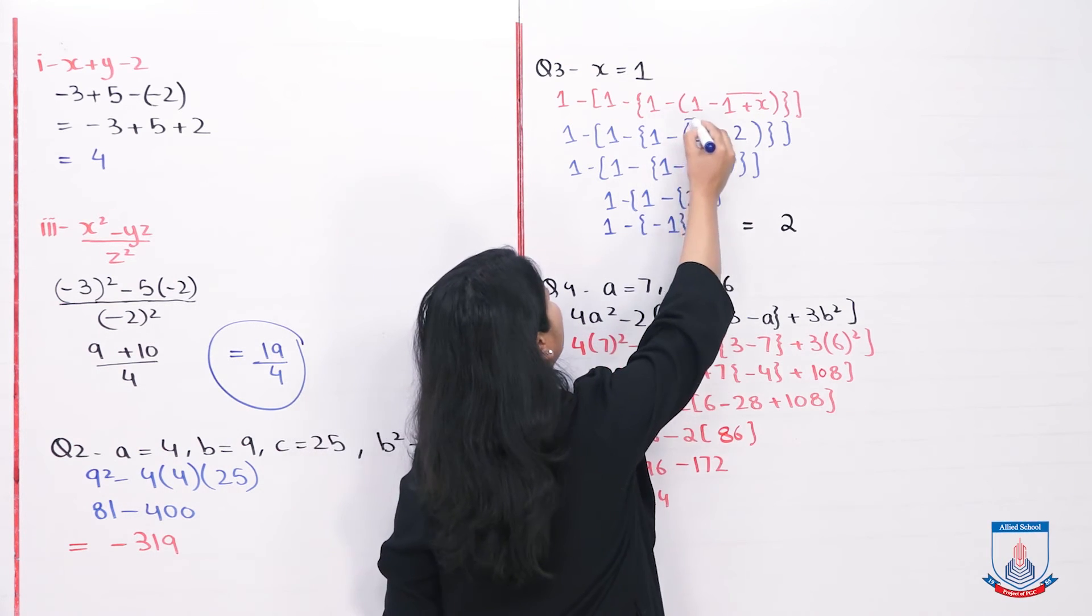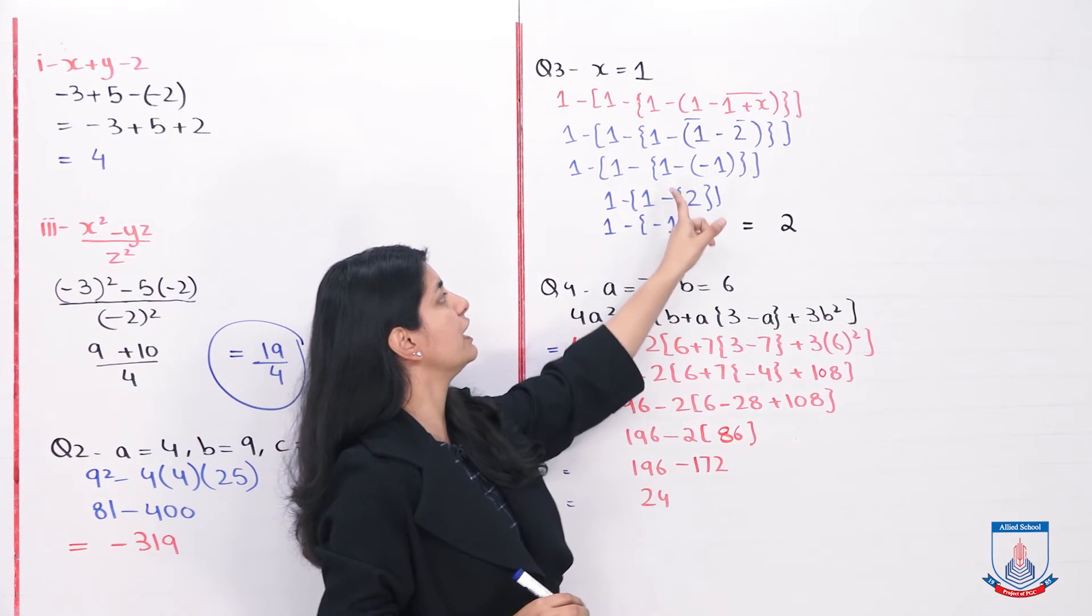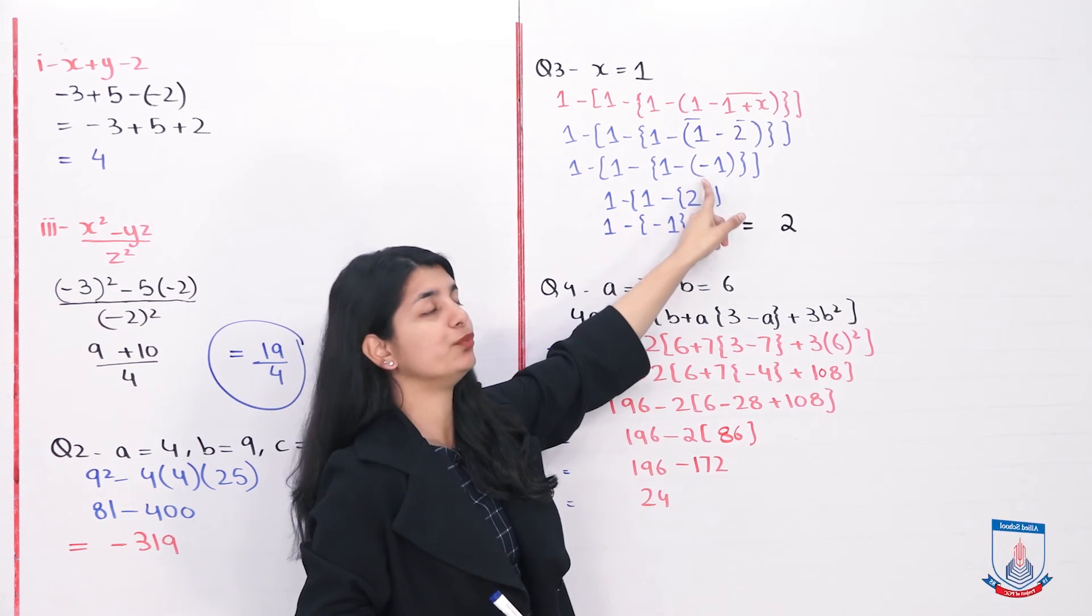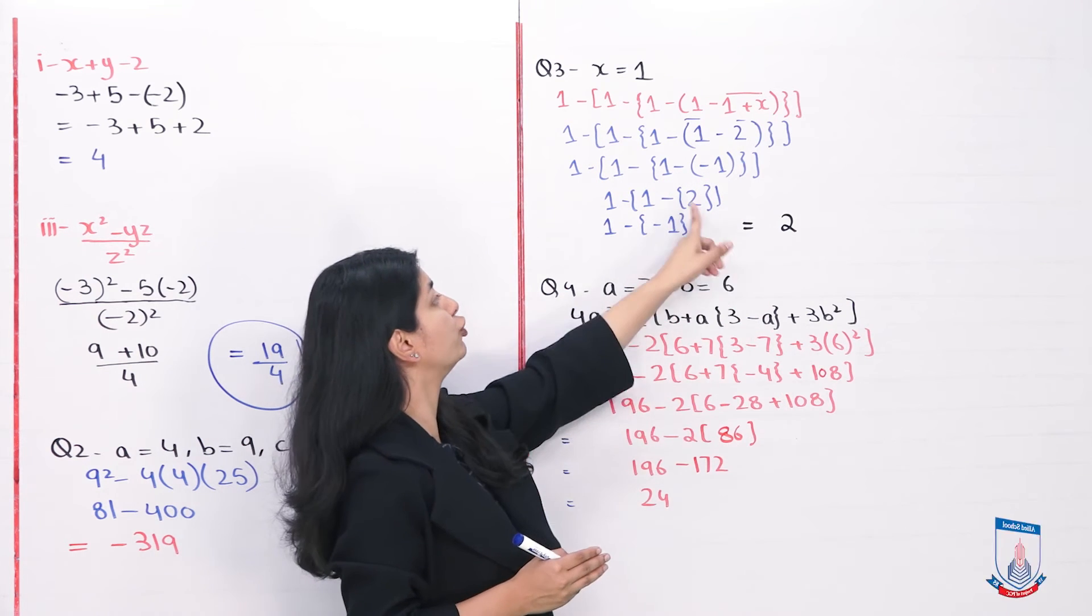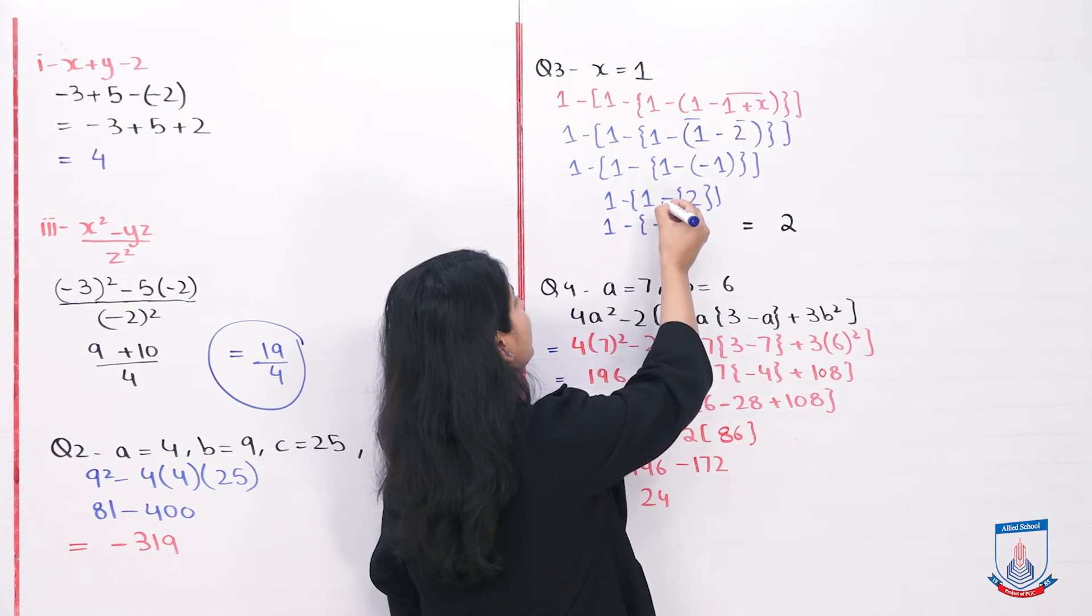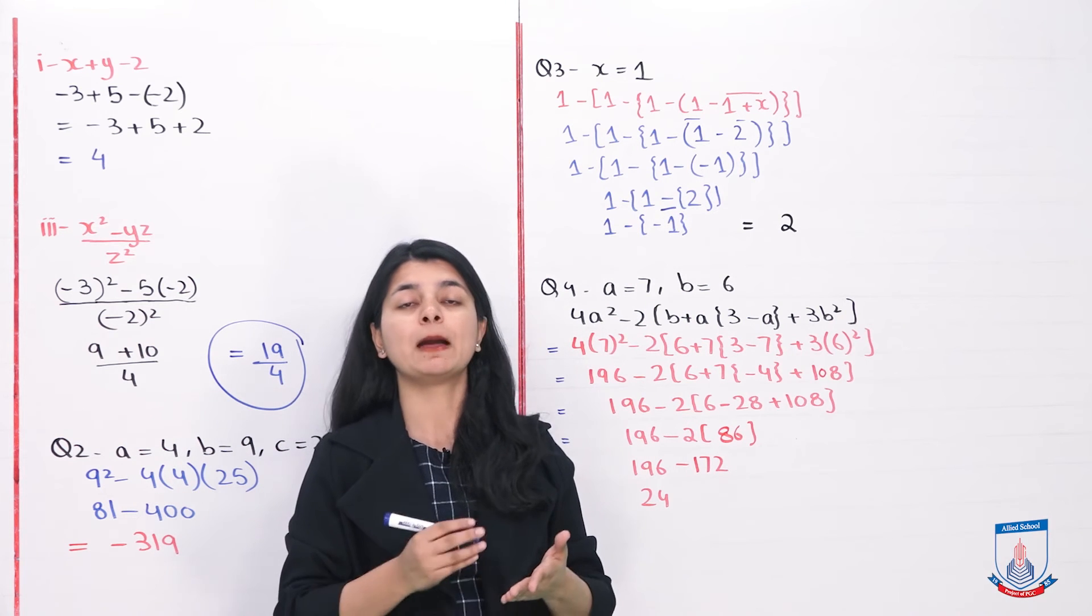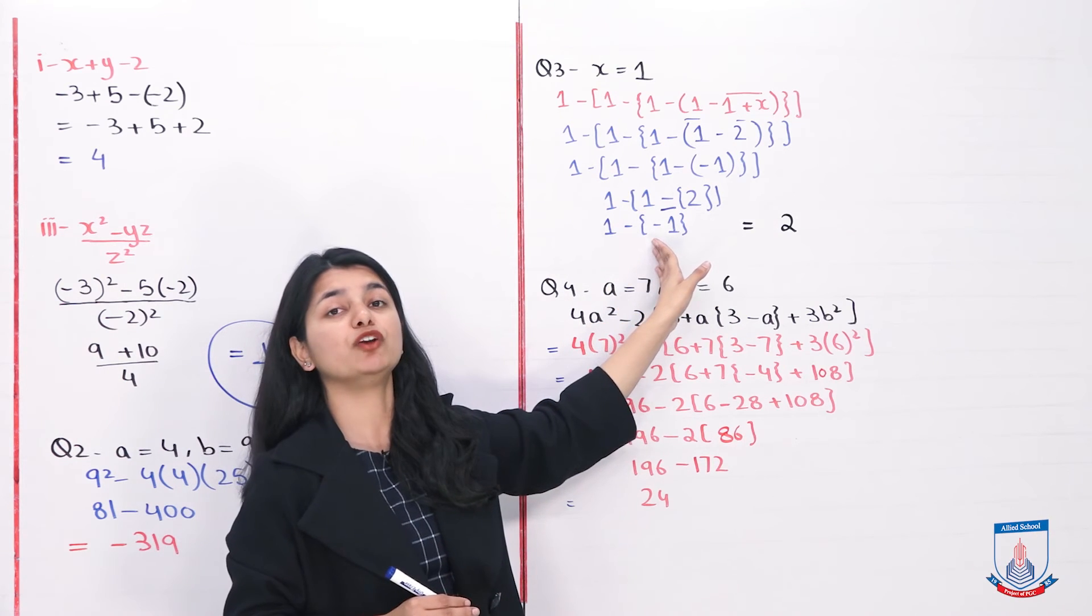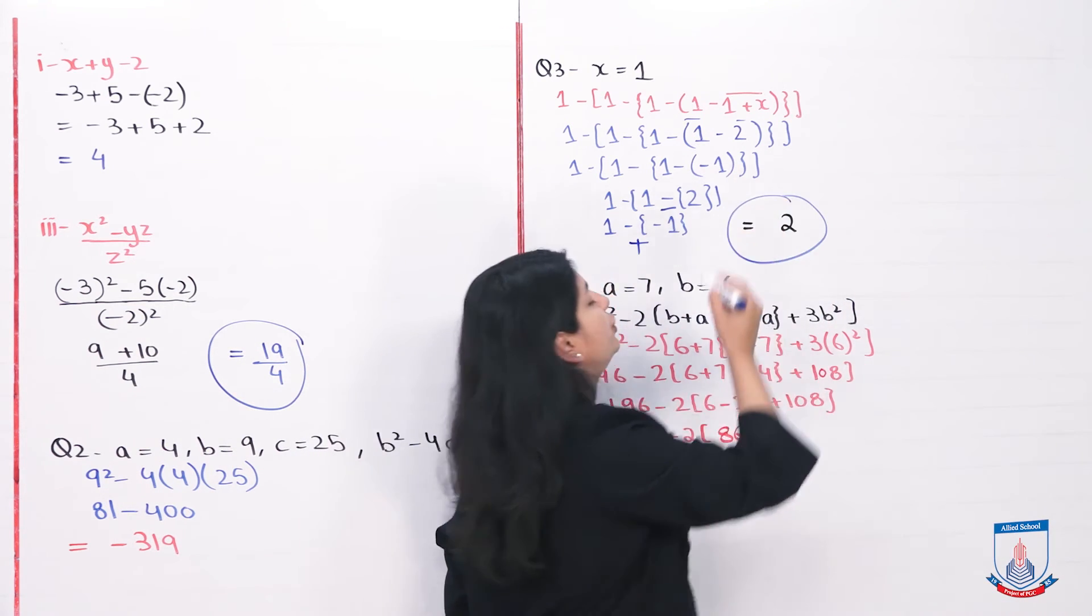Next step is to open the parenthesis. 1 minus 2 is minus 1. To open this bracket, I multiply by the outside sign. 1 minus into minus 1 becomes 1 plus 1, which is 2. The parenthesis is open and 2 is inside the braces. To solve this, I multiply by the outside minus: 1 minus 2 is minus 1. Then the outside 1 minus the inside 1, minus into minus becomes plus. 1 plus 1 is 2, so the answer is 2.